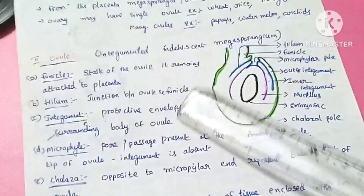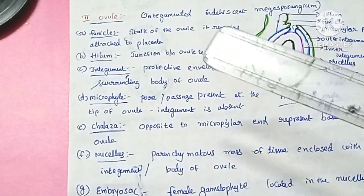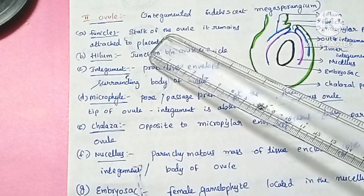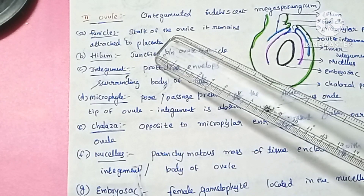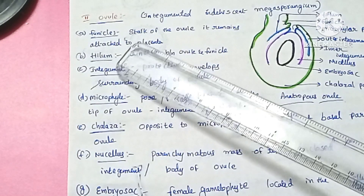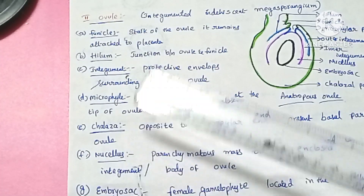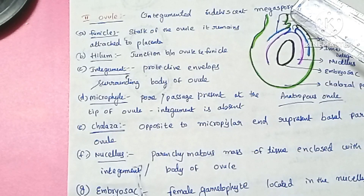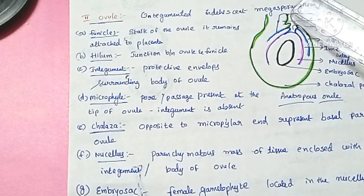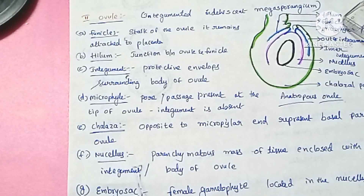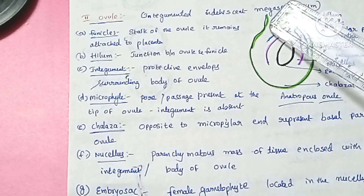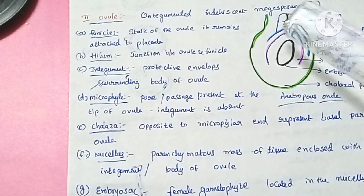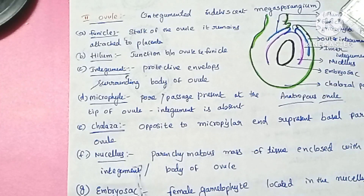Next we will see the structure of the ovule. The ovule is also called integumented megasporangium. The ovules are present within the ovary. The first part of the ovule is called the funicle — a stalk-like structure. By means of this funicle, the ovule is attached to the placenta.